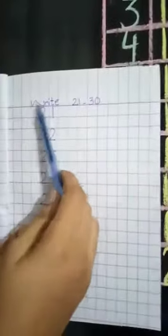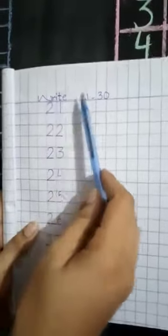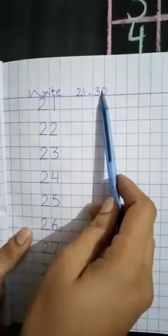Okay ji. Today we will do 2 works. First work is math. Take out your math notebook and open this page. First of all you will write here date and day. Then you will start writing. Today's our new work is write 21 to 30.